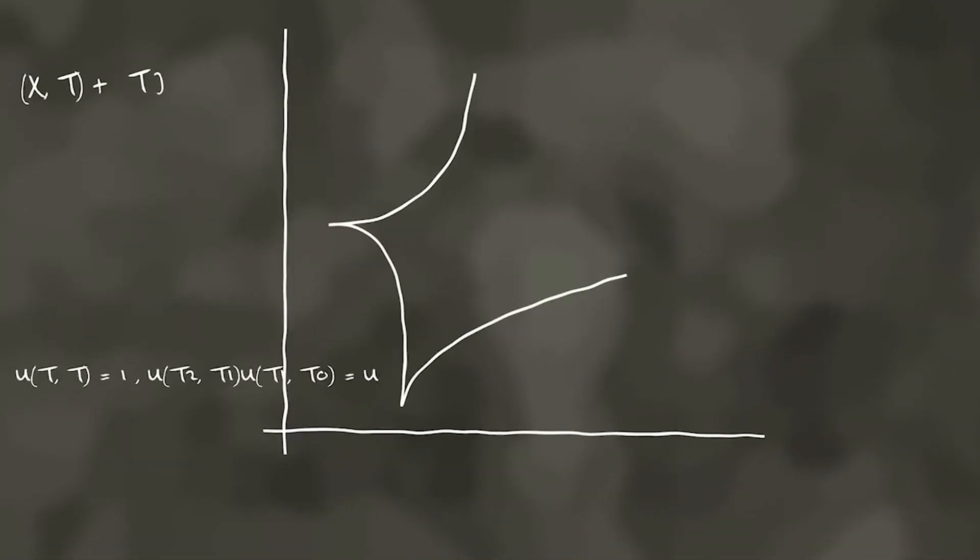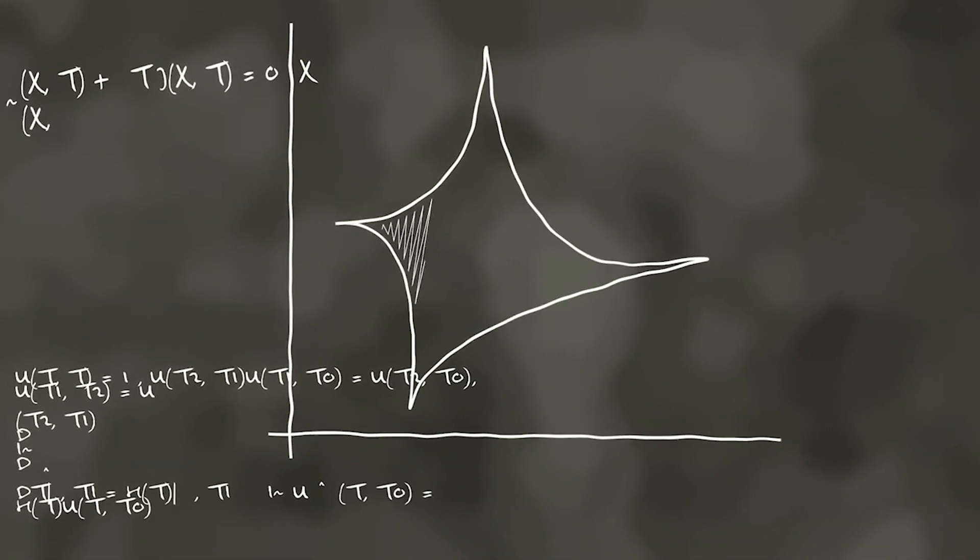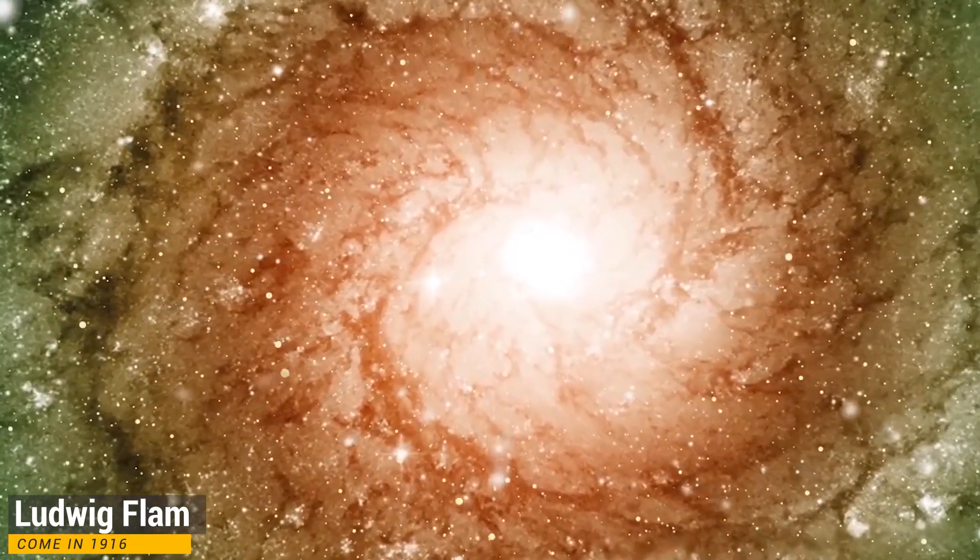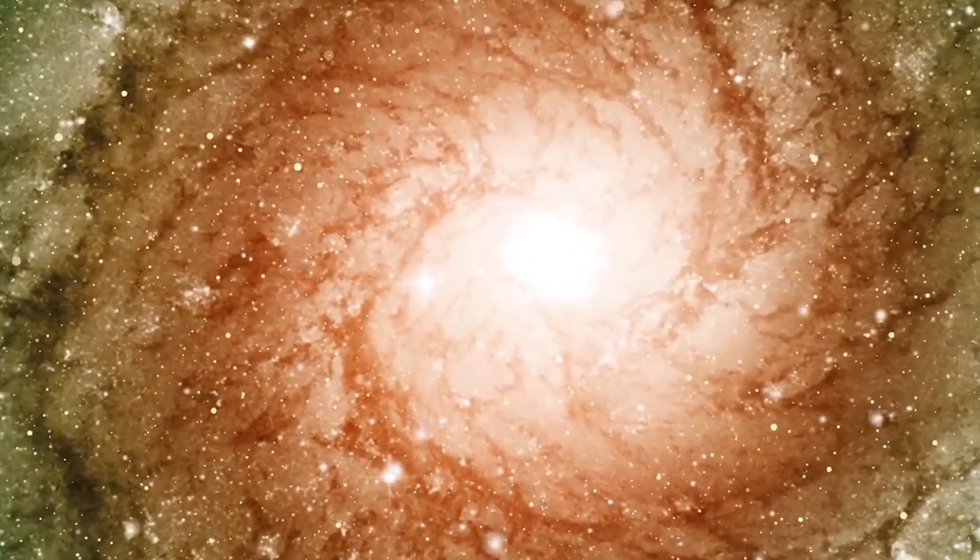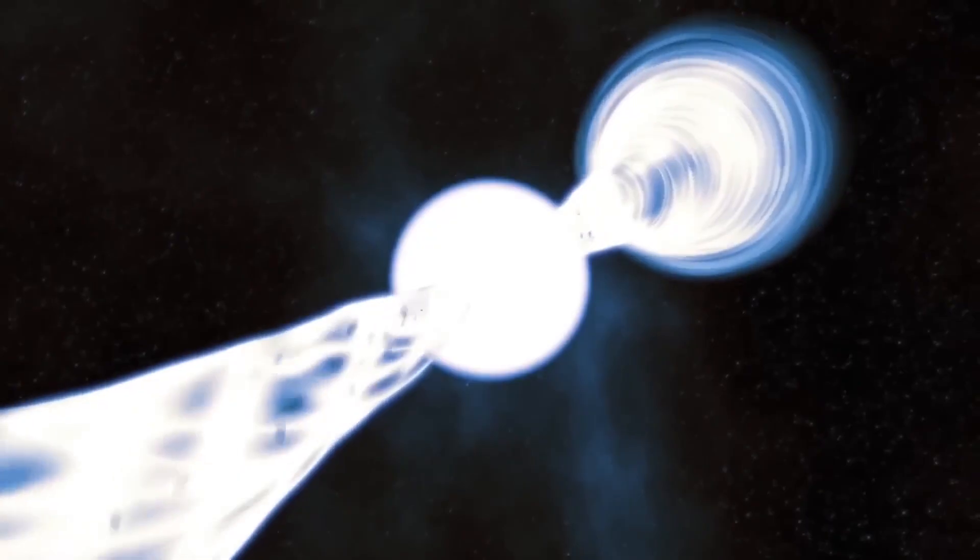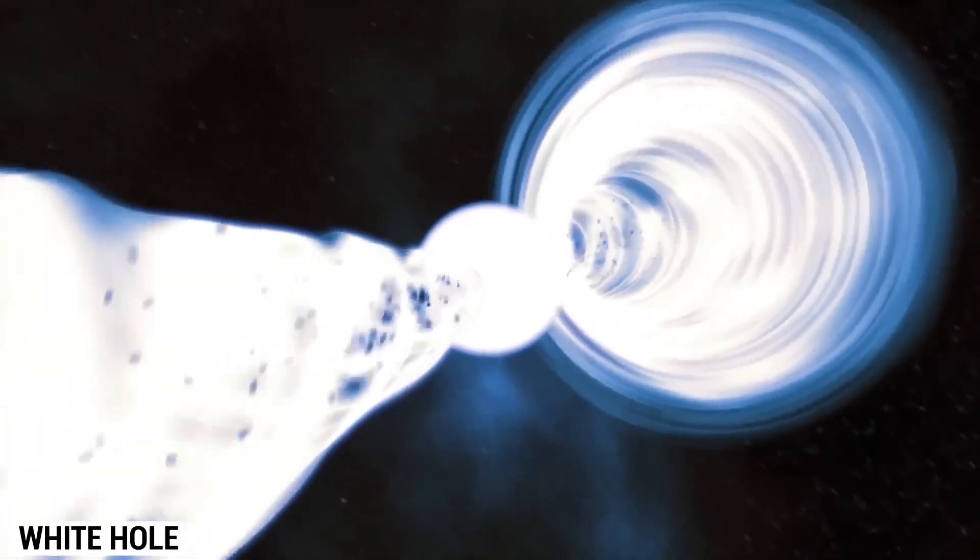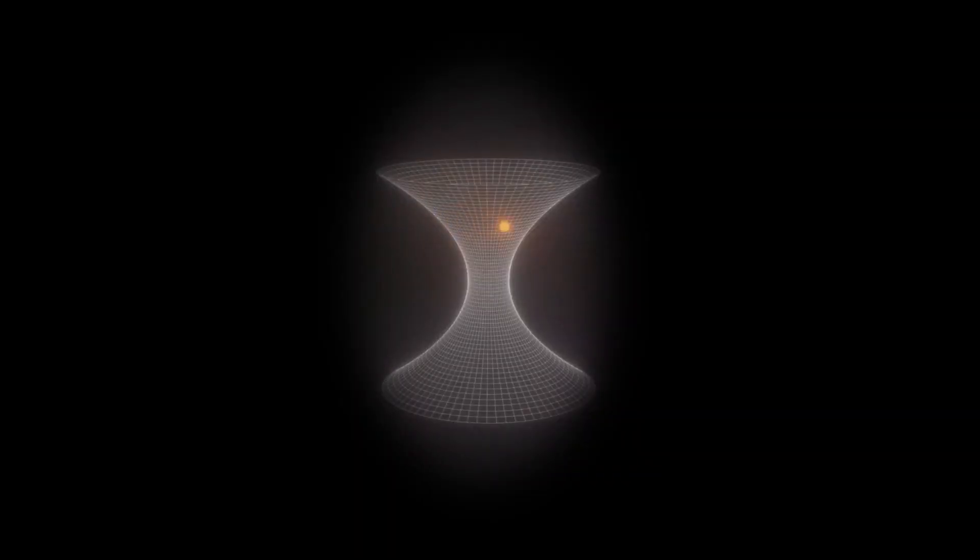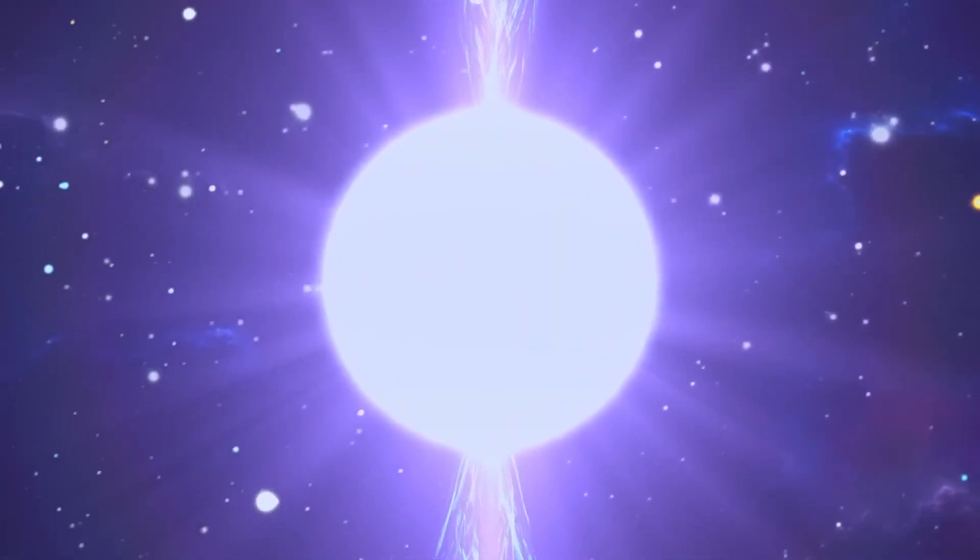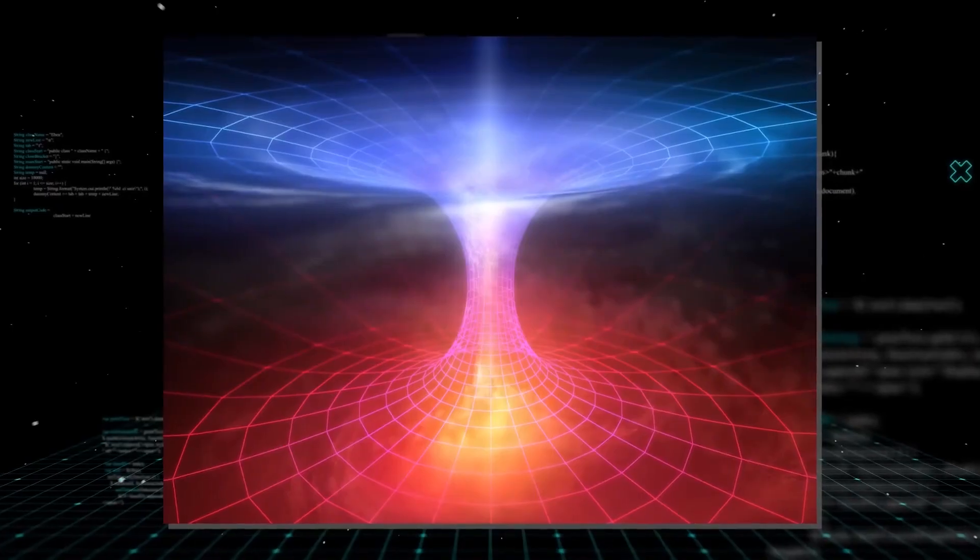Although they weren't called wormholes initially, the idea about them came in 1916. Ludwig Flom, an Austrian researcher, discovered a new answer to Albert Einstein's general relativity equations while looking at results provided by other researchers. He discussed a white hole, which is like a black hole but with time going backward. Possibly, there's a path through space and time that leads toward both black and white holes.